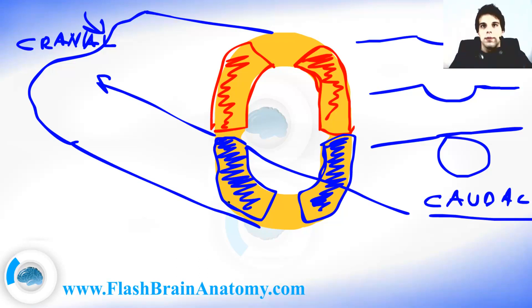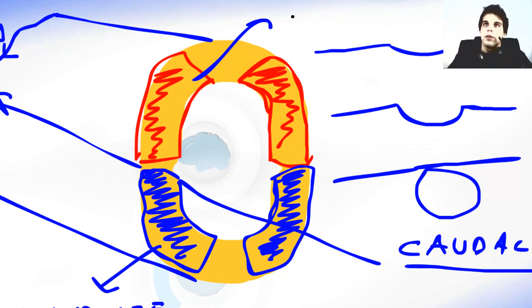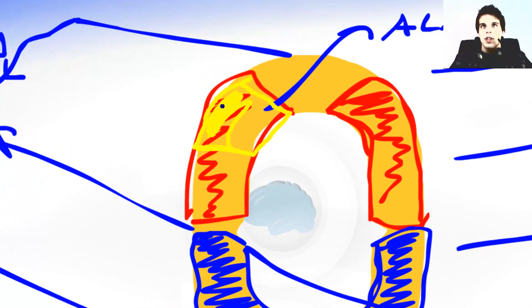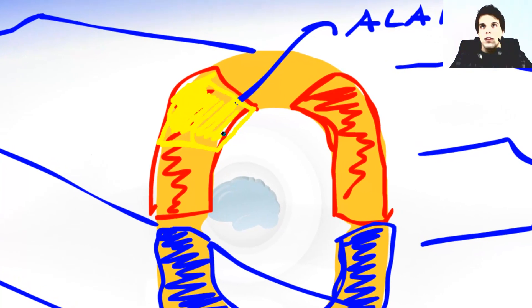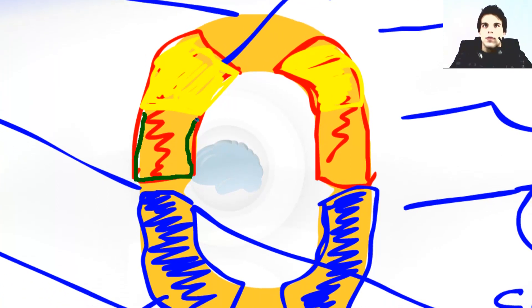Now let's get back to the neural tube. This was the basal plate on the ventral side, and this was the alar plate on the dorsal side. The dorsal part of the alar plate is important for environmental perception or somatic sense. The more ventral part is important for the introspective perception.